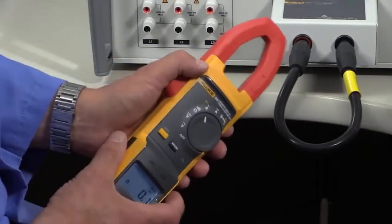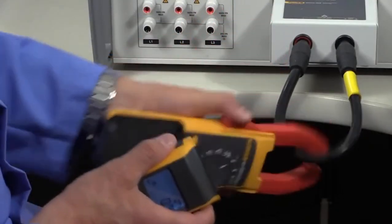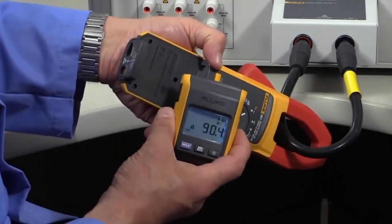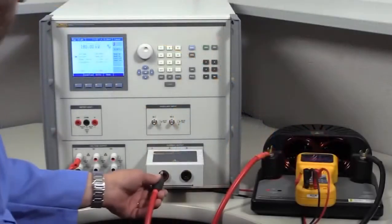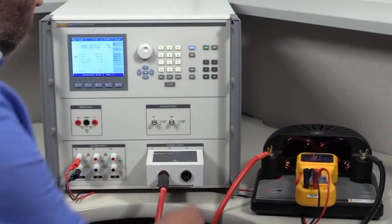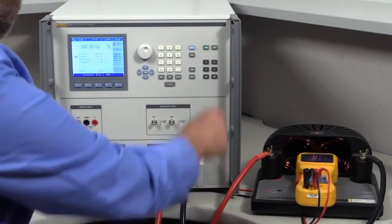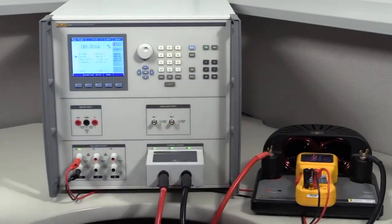The 90A adapter and high current leads allow you to generate up to 90A from a single current phase, which can help you address your higher current workload. You can also use Fluke calibration coil accessories with the 90A adapter to support current clamp verification up to 4500A.